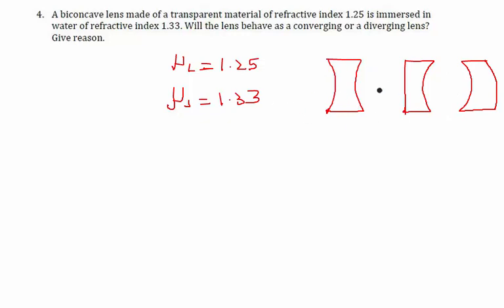Basically all are diverging in nature if they are in air or a rarer medium, for example vacuum, but in this case the surrounding has a higher refractive index or is optically more dense. Let's analyze what the focal length will look like for this lens.